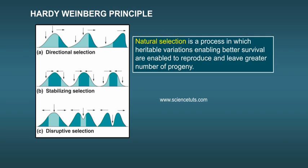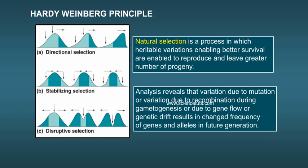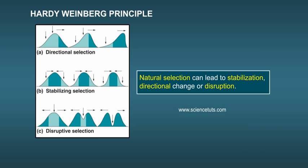Natural selection is a process in which heritable variations enabling better survival are enabled to reproduce and leave greater number of progeny. Analysis reveals that variation due to mutation or variation due to recombination during gametogenesis or due to gene flow or genetic drift results in changed frequency of genes and alleles in future generation. Natural selection can lead to stabilization, directional change, or disruption.